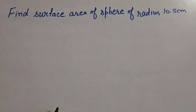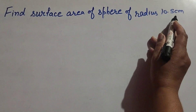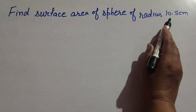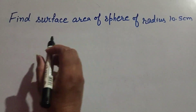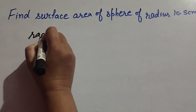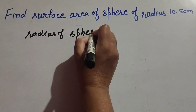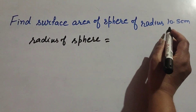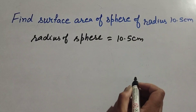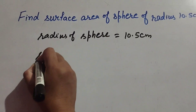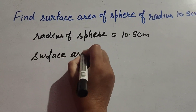Hello friends, welcome to my channel. In this video we find the surface area of a sphere of radius 10.5 cm. The radius of the sphere is given as 10.5 cm.